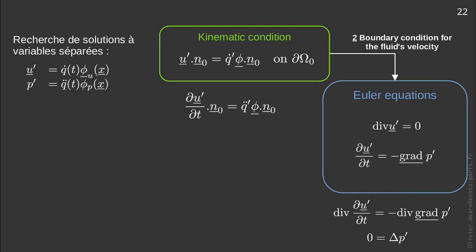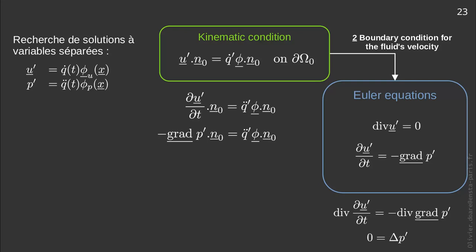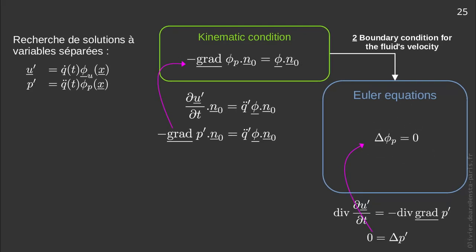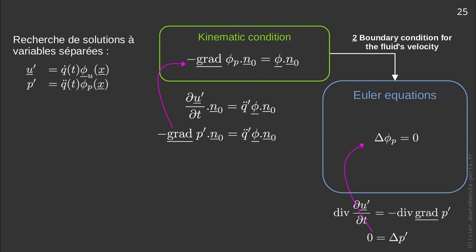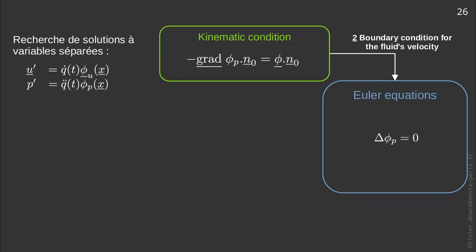Let us now derive the kinematic condition with respect to time. The term du' over dt on the left can be replaced by minus gradient of p'. So we have a boundary condition that now relates to the pressure rather than the velocity. The Laplacian of p' can now be written Laplacian of phi_p equals zero. And similarly, since in the kinematic condition q' dot appears on each side, we can write it with only the modal fields phi_p and phi.